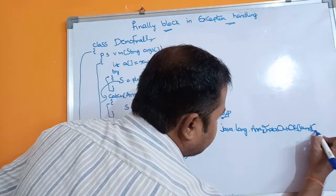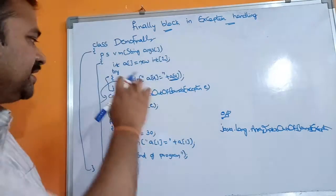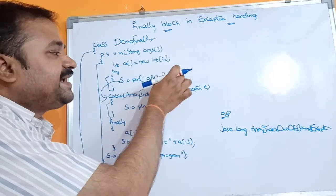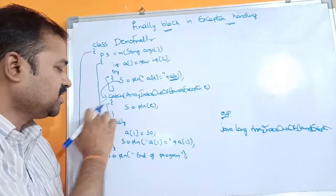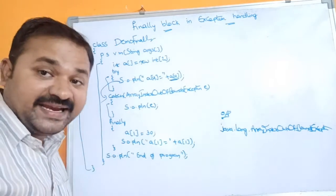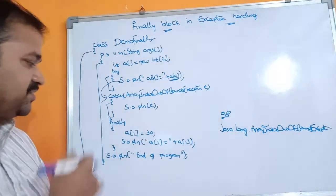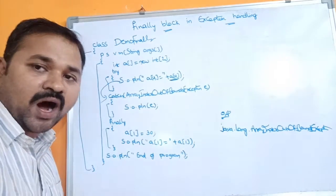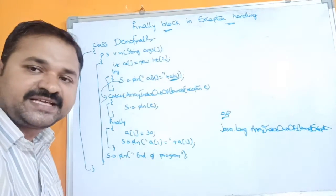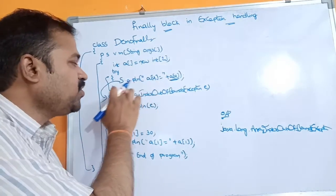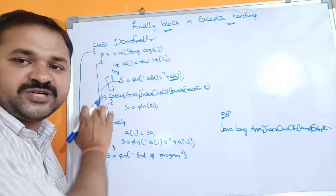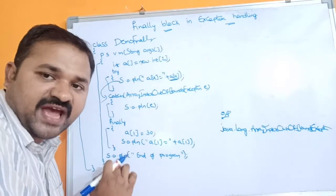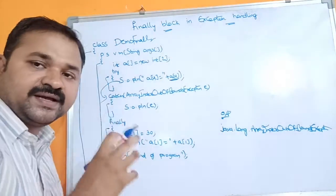The line inside the try block after the exception won't print because the throw keyword throws the ArrayIndexOutOfBoundsException object to the catch block. The catch block contains statements that handle the exception, so it gets executed. After executing the catch block, control goes to the finally block. The finally block always gets executed whether there is an exception or no exception.